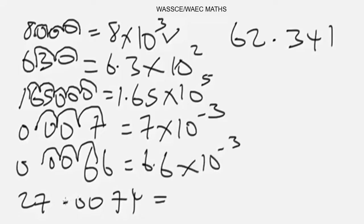Whereas this one, we are going to move backwards. This point is here, move backwards just once. So to express this one as standard form, it's going to give us 2.700074 times 10 to the power 1.